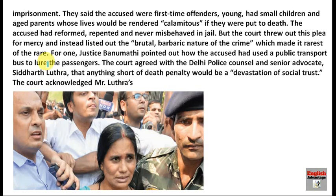The defense lawyer pressed for life imprisonment, saying death penalty was too severe. They said the accused were first-time offenders, were young, had small children, and had aged parents whose life would be rendered calamitous if they were put to death. They also argued that the accused had reformed, repented, and never misbehaved in jail. But the court threw out the plea for mercy and instead listed out the brutal, barbaric, sadistic nature of the crime.